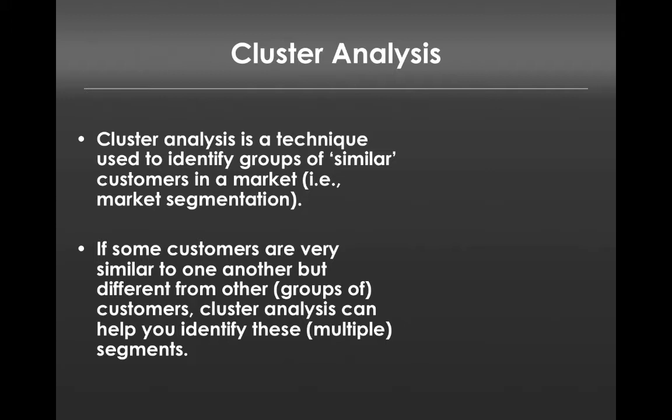Let's imagine for a second that I have a set of customers that look like this. We've got two dimensions for simplicity's sake: one is price sensitivity and the other is brand loyalty. Customers vary along those dimensions and each blue dot represents a set of customers.